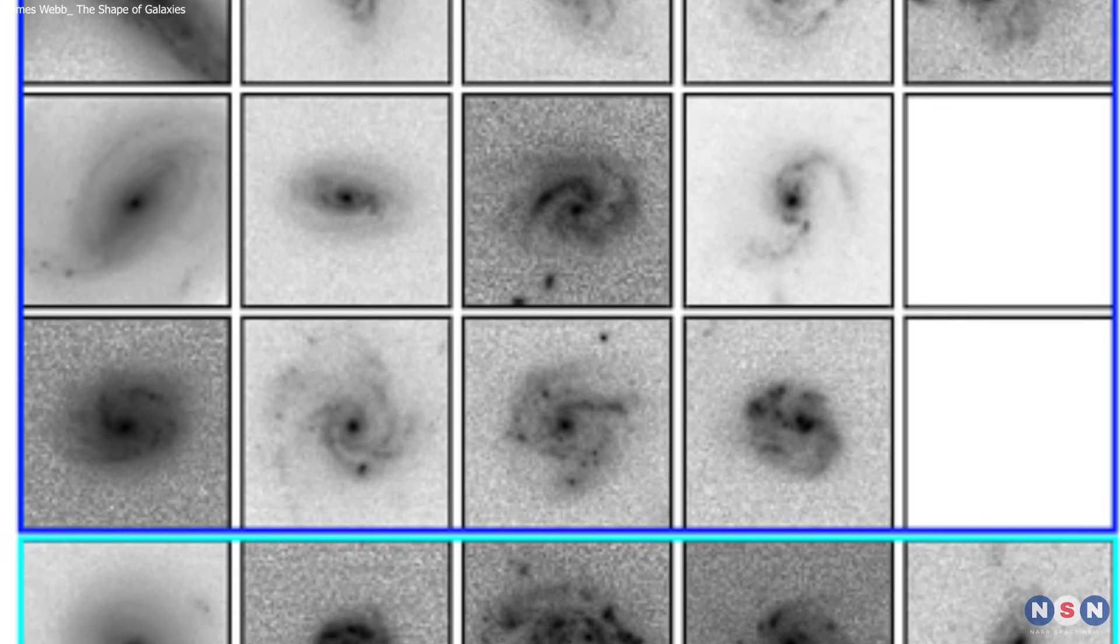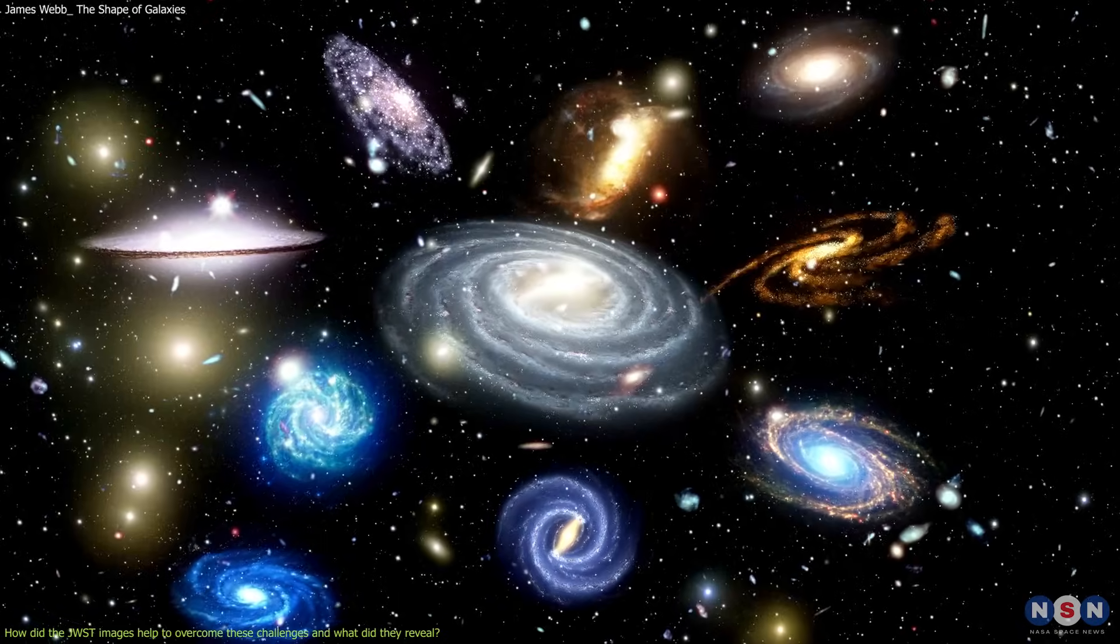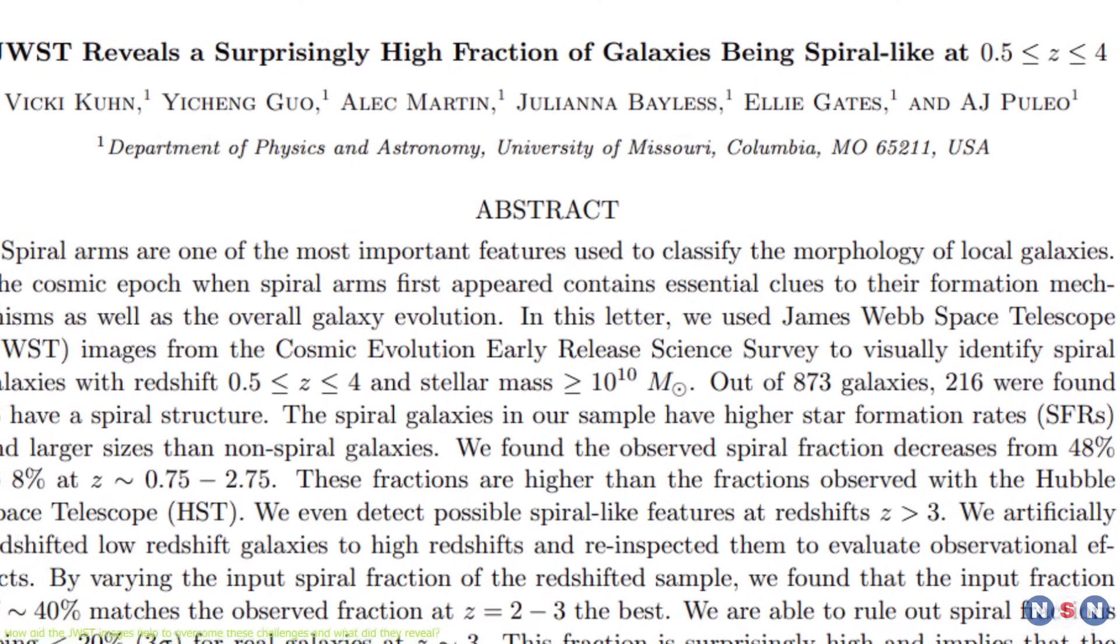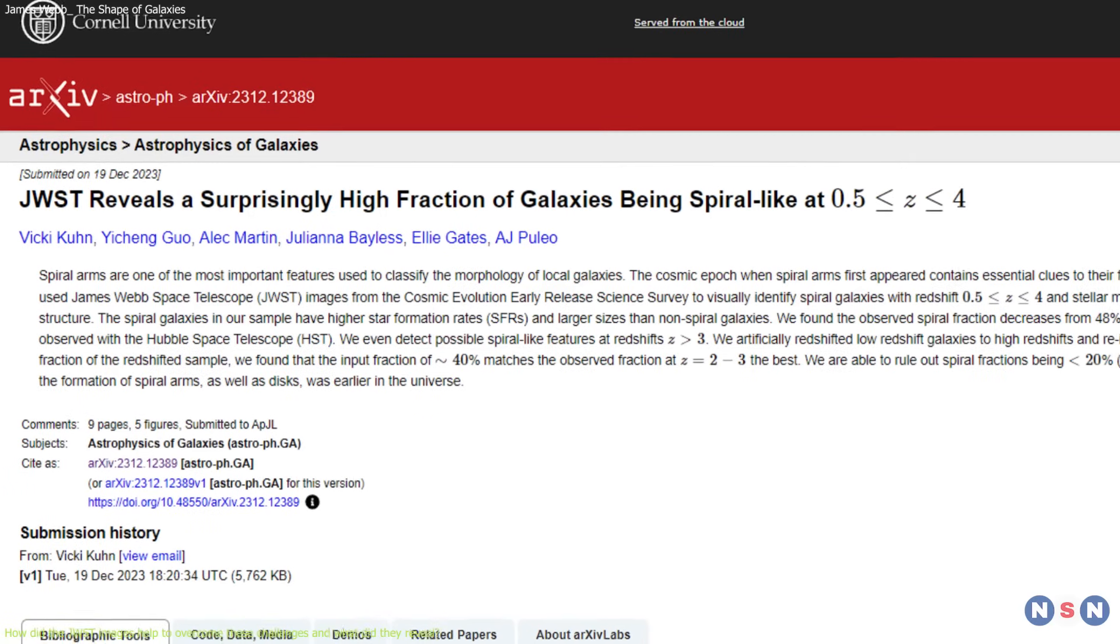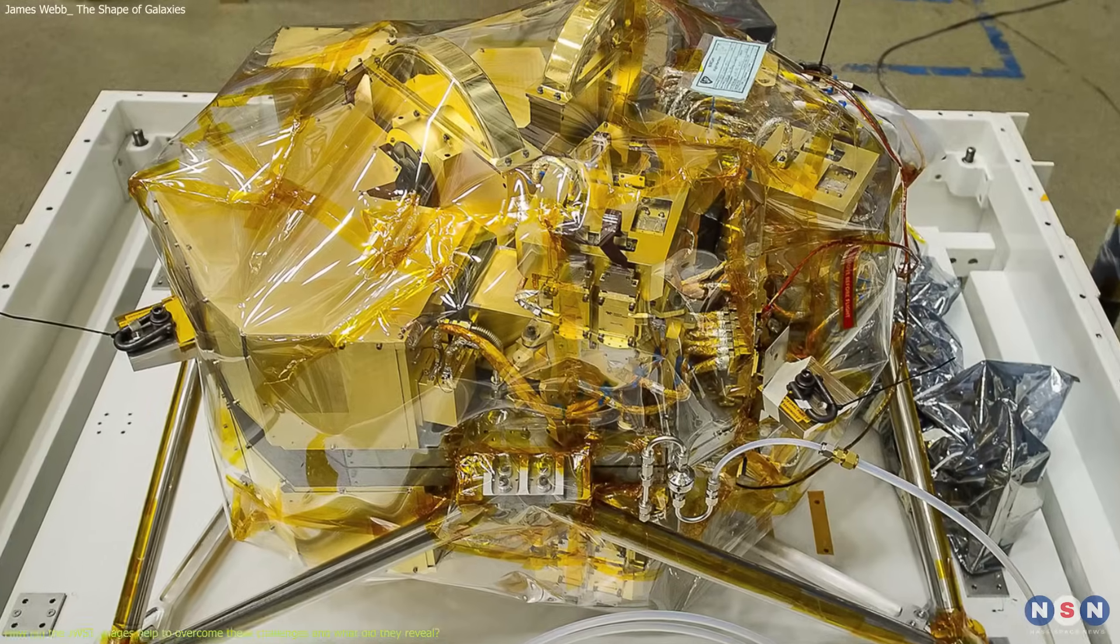One of the first studies that used the JWST images to study the morphology of galaxies in the early universe was published in 2023 by a team of astronomers from different countries, and it is submitted to the Astrophysical Journal Letters. It used the images from the NIRCam instrument.